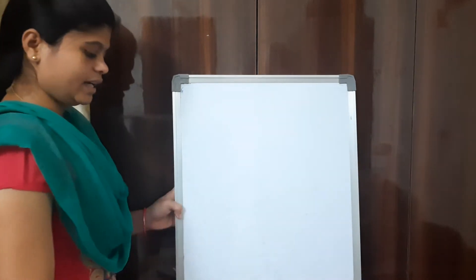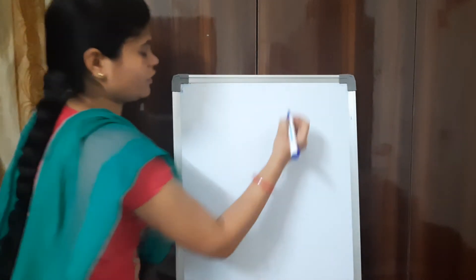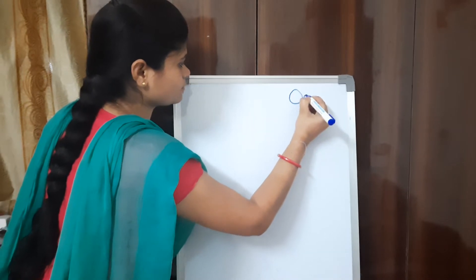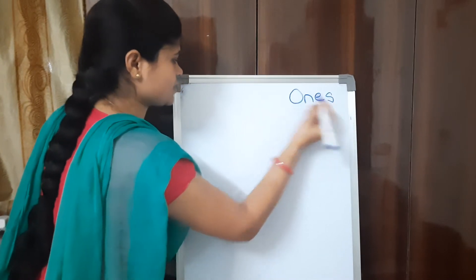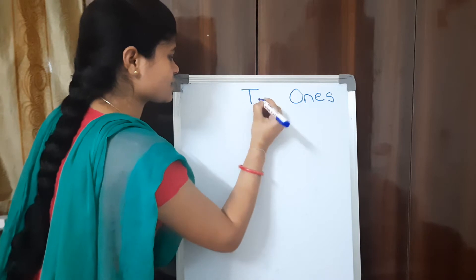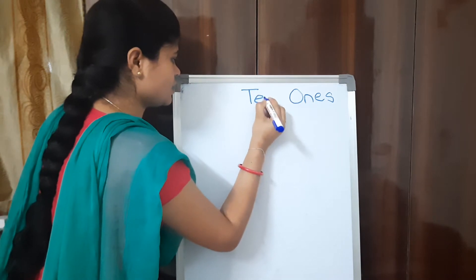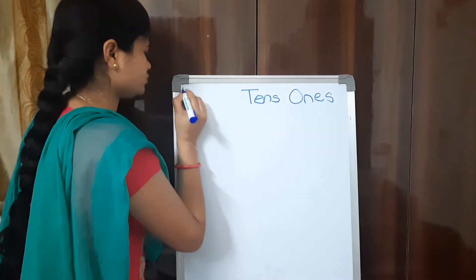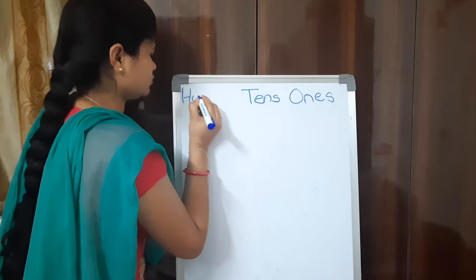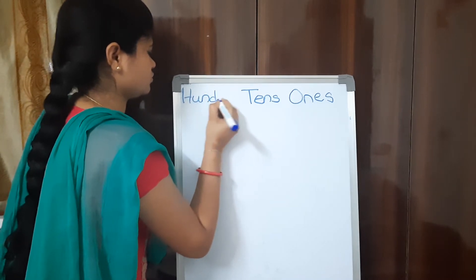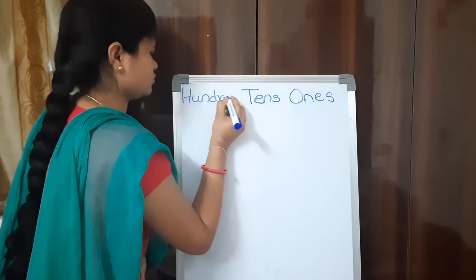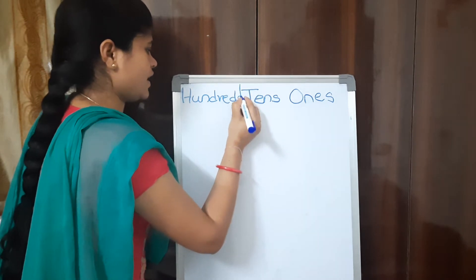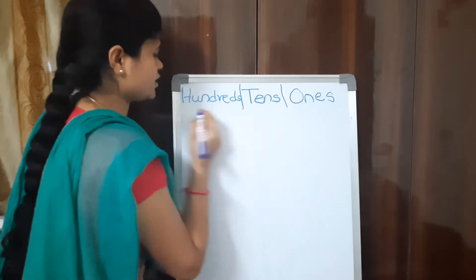In 3-digit numbers we have 3 place values: the 1s place, the 10s place, and the 100s place.